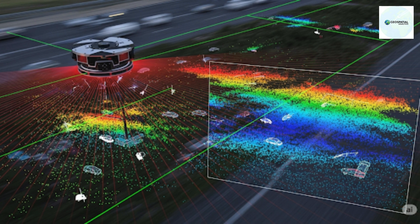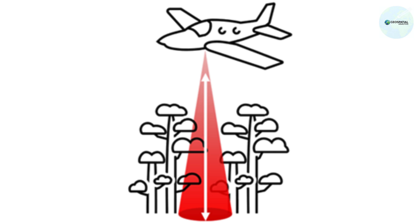The LiDAR system emits laser pulses that reflect off objects, generating one or more returns with each pulse. This method results in highly accurate location and height measurements in the form of a mass point cloud data set. Using ArcGIS Pro, you can visualize and analyze LiDAR data, as well as create derivative products such as elevation and surface models.